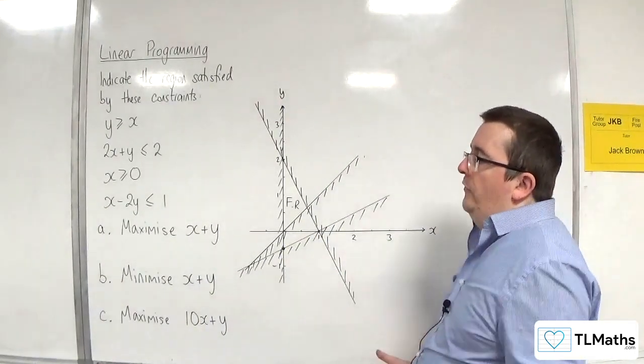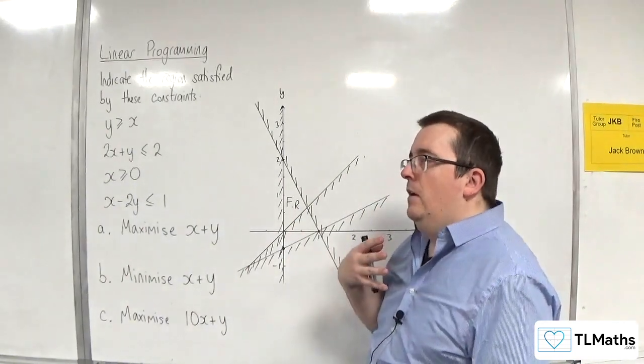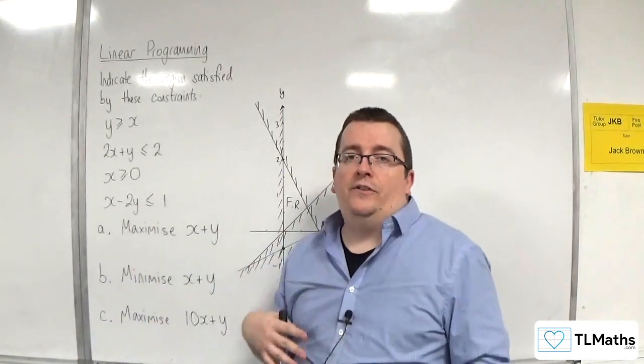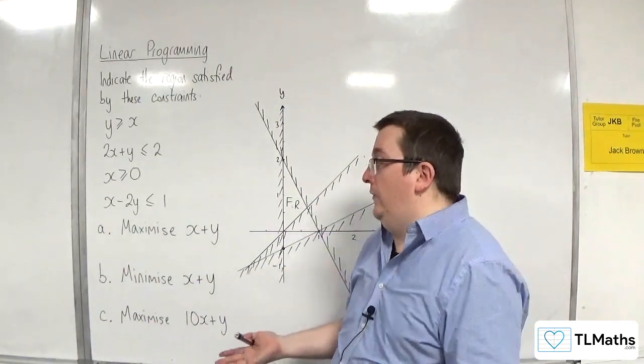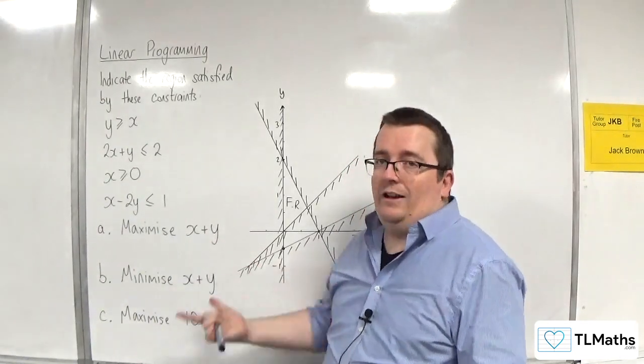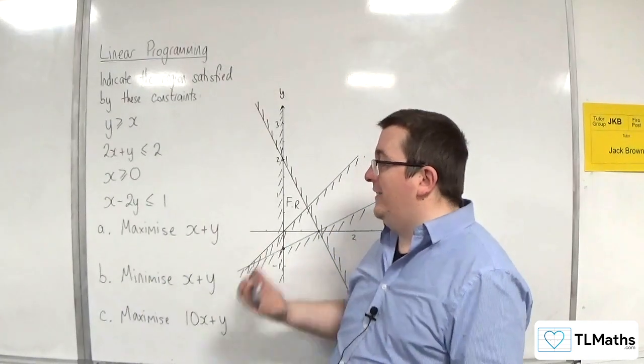So what we want to do is we want to, let's say, the profit that I get on a chair and on a table is exactly the same. So then I would maximize X plus Y because the profit I'm making on both of them is exactly the same.